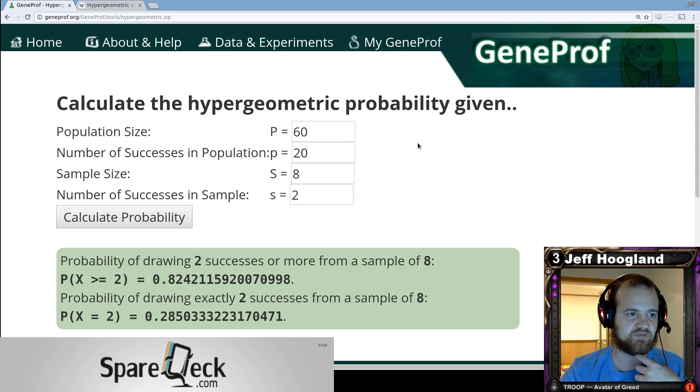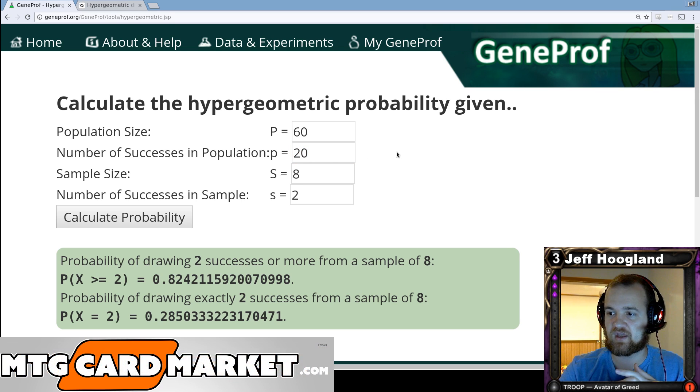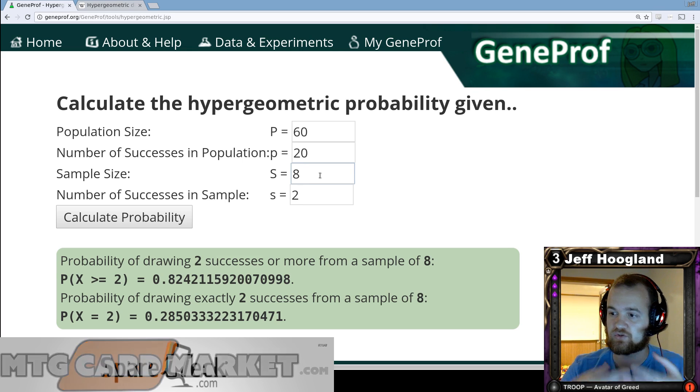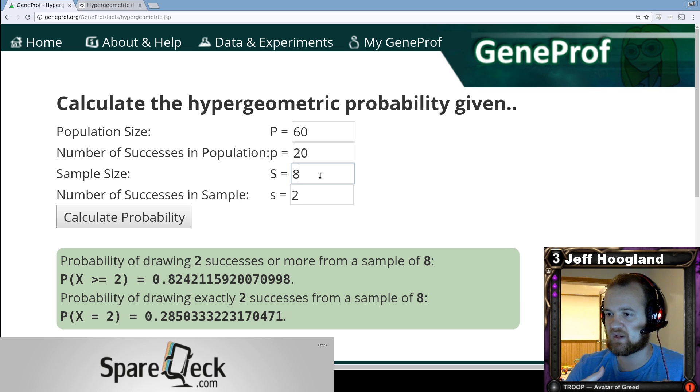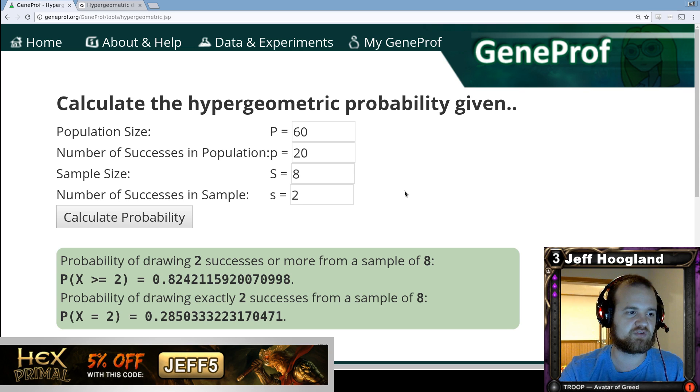So again, just the four key pieces here. The population size is how big your deck is. The number of successes in the population is the number of the thing you're looking to draw. In this case, we're looking at how many black sources we have. The sample size is how many cards you're looking at out of your deck. So in this case, we're looking at turn two, which means we have seven cards in our opening hand plus one draw step, so eight. And then number of successes in the sample, how many of those resources we're looking to have in those eight cards. So in this case, we want at least two of them.